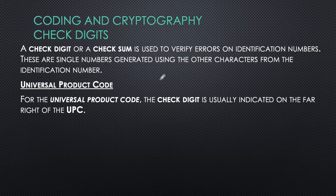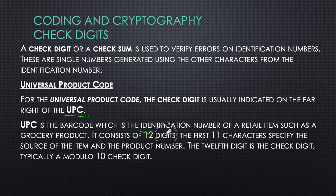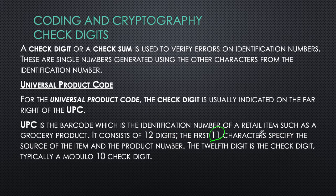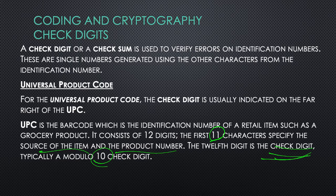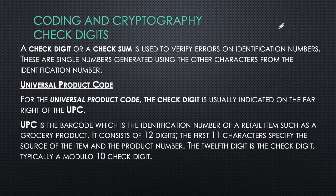For the UPC, the check digit is usually indicated on the far right of that code. The UPC is the barcode — the identification number of a retail item such as a grocery product. You can see those numbers below the barcode that counters scan. It consists of 12 digits: the first 11 characters specify the source of the item and the product number, and the 12th digit is the check digit, typically a modulo 10 check digit. In modulo 10, the result should end with zero.